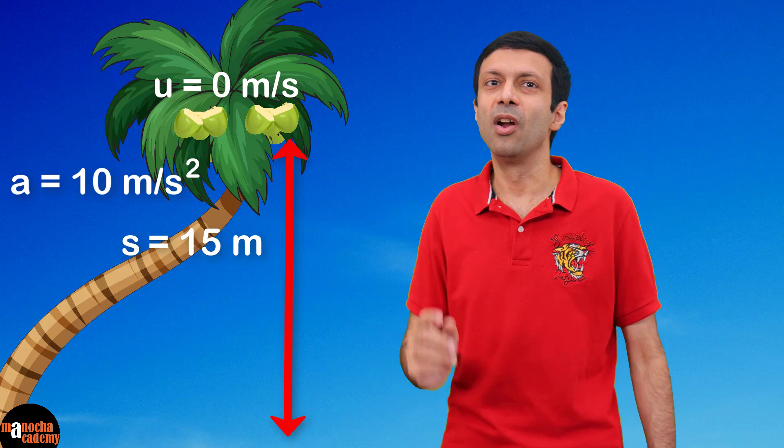We use the third equation of motion: V² = u² + 2as, to calculate the final velocity when the coconut hits the ground. Substituting the values and doing the calculations, the final velocity V is the square root of 300, which is 17.32 meters per second — approximately 17 meters per second. Of course, we are ignoring air friction here.